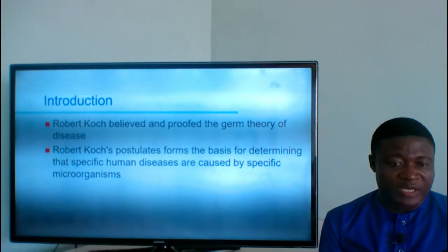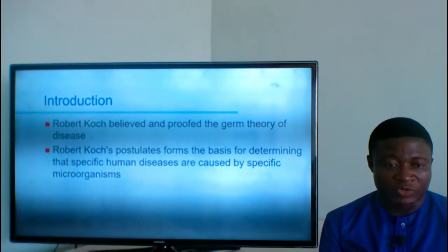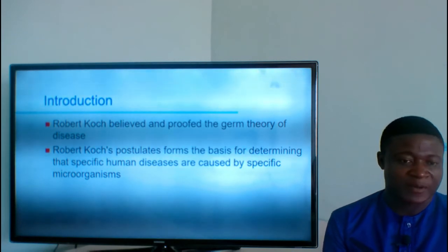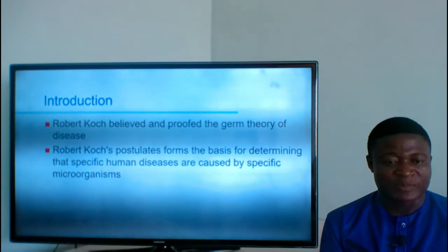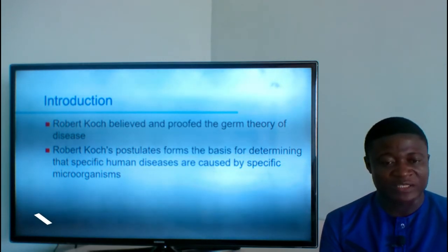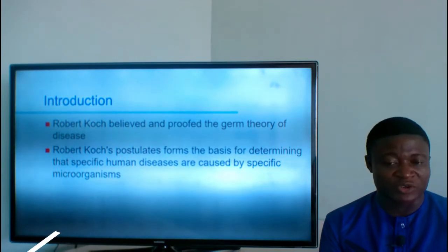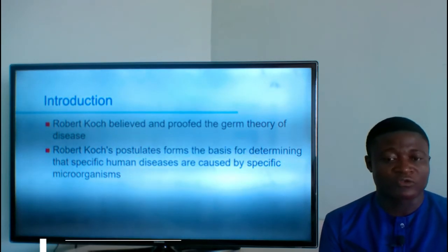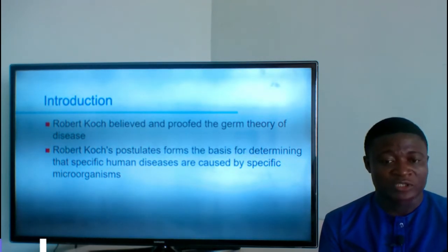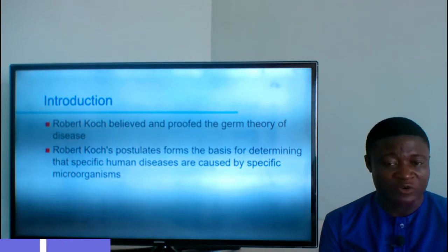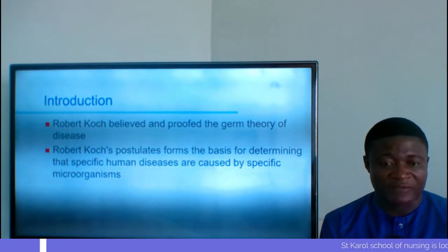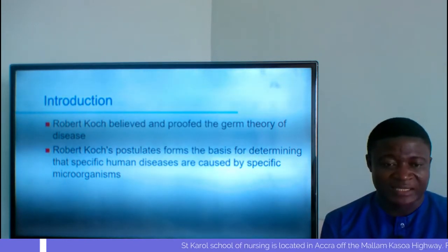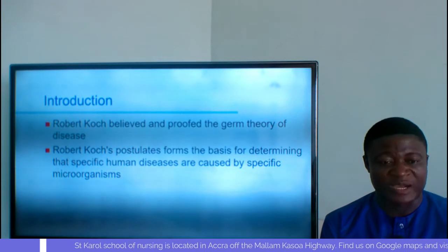Robert Koch believed and proved the germ theory of disease. When we were doing the first aspect of microbiology, we said Louis Pasteur believed in the presence of microorganisms but could not prove the germ theory until Robert Koch came into the scene and proved it using the bacteria that causes anthrax, culturing them. Robert Koch's postulates form the basis for determining that specific human diseases are caused by specific organisms.